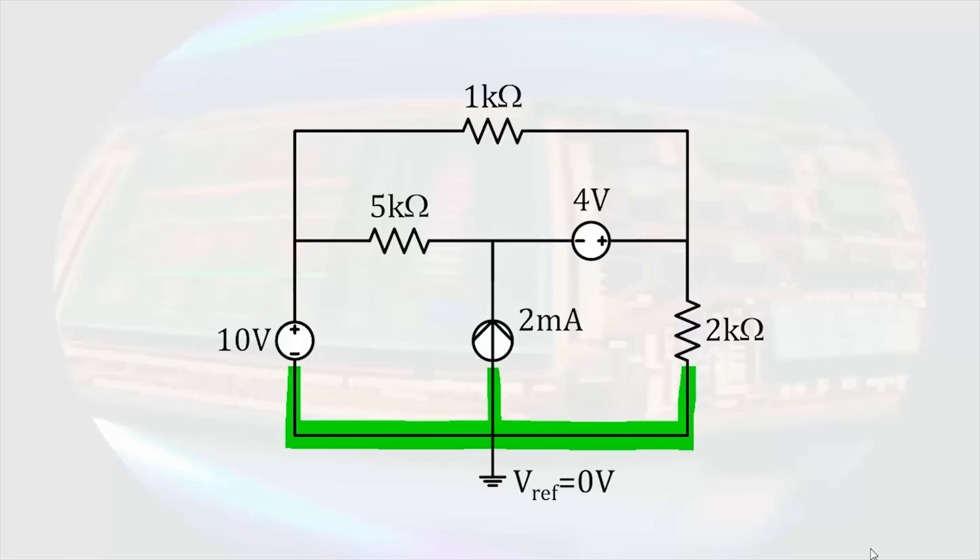We begin by selecting a convenient reference node. Since ground is already indicated in the circuit diagram, that is a reference node, or 0 volts for this circuit. The 10 volt source is connected to the reference node, but the 4 volt source is not. Rather than do anything special to deal with the 4 volt source, let's proceed with the typical steps of node voltage analysis.